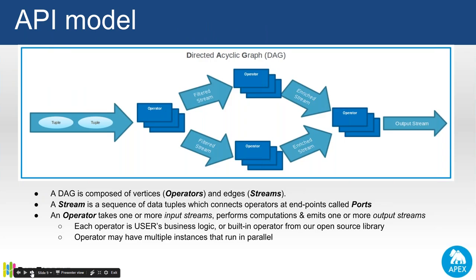Any application in Apex is designed as a directed acyclic graph. Vertices in this graph represent computational units, or operators as we call them, and the edges represent the streams — the data flowing over the wire. Streams are represented as tuples, which are Java serializable objects with an associated schema.